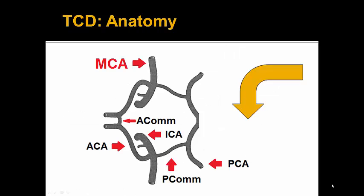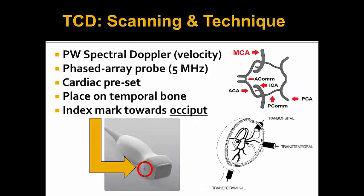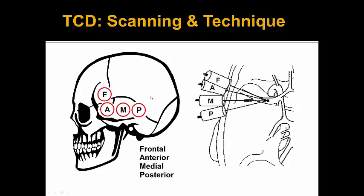If we turn the previous diagram counterclockwise 90 degrees, we still have the circle of Willis on its side, with our anterior communicating artery, our ACOM, and our PCOM connected to the PCAs. Most importantly, we bring out the MCA artery in-plane and closer towards us so that we can insonate it more properly. For TCD scanning and technique, we'll primarily use the phased array probe at 5 MHz in the cardiac preset, using both color and pulse wave spectral Doppler to insonate velocities of the MCA. We'll place it in the transtemporal window with the index mark pointing towards the occiput.